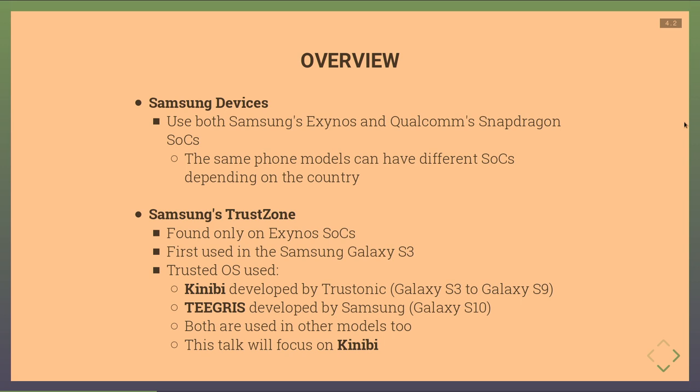Samsung's TrustZone was first used on the Galaxy S3. Two trusted OSes have been used: Kinibi, developed by Trustonic, found from the Galaxy S3 to the Galaxy S9, and their own implementation called Teegris found on the Galaxy S10. These are also used on other Samsung phone models. This talk will focus exclusively on Kinibi.